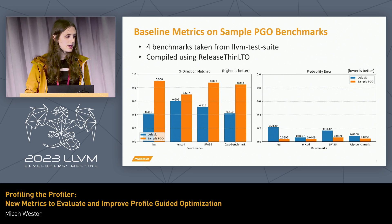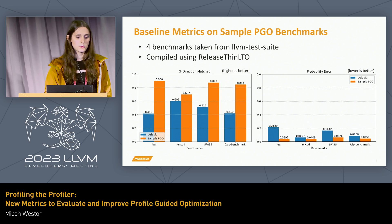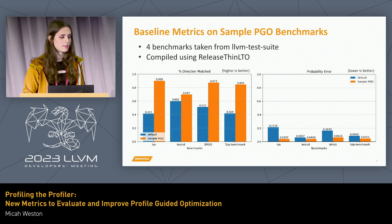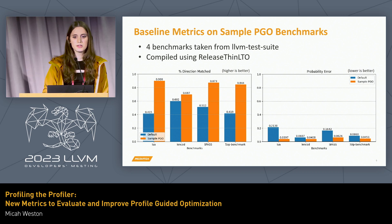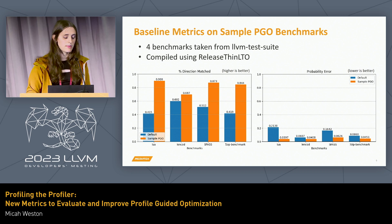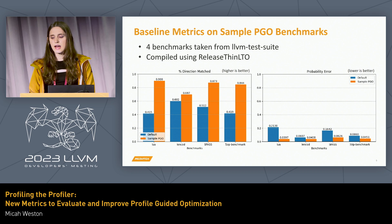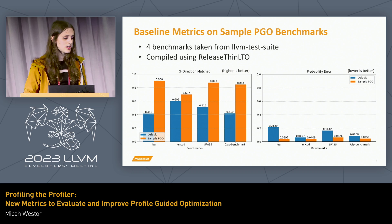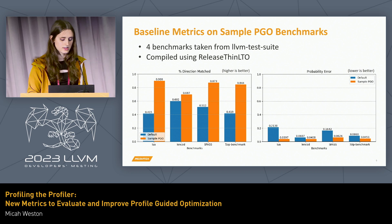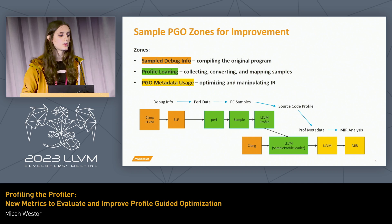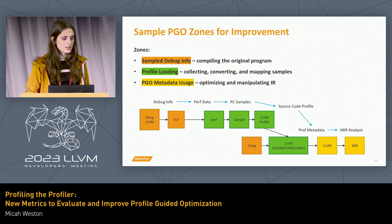With these metrics, we've been able to run them on benchmarks. We used sample PGO on four LLVM test suite benchmarks compiled with release ThinLTO and compared it against a default compilation. As you can see, sample PGO gives a noticeable boost in direction match and also brings down the probability error. As we continue forward, we would hope that these levels stay the same or improve. If you see a noticeable drop, there might be a bug that was introduced that would need to get fixed. At MediaTek, we primarily use sample PGO, so this is what we've tried to improve and break down into zones for improvement.